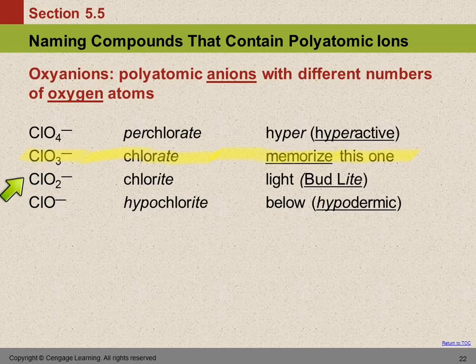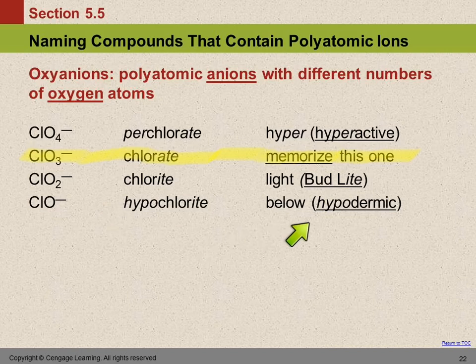Chlorite has one less oxygen than chlorate — it's the light version, like Bud Light having fewer calories. And then hypo is below light. The prefix hypo means below or less than. For example, hypodermic needle goes below your skin — dermis is your skin, hypodermic means below the skin. So hypochlorite has one less oxygen than chlorite. You see the pattern?